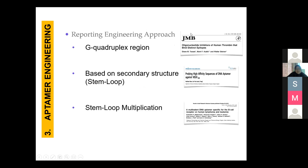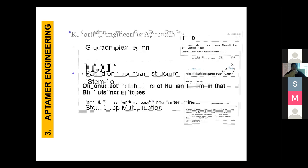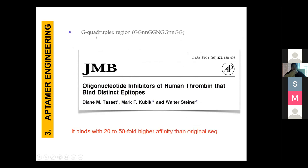Research studies on aptamer engineering suggest: first, folding the aptamer sequence into a 2D structure reveals G-quadruplex regions, which often have better or higher affinity to the target; second, focusing on stem-loop regions from the secondary structure. For example, one study found that when other sequences were removed and only the G-quadruplex region was maintained, it bound with 20 to 50-fold higher affinity than the original sequence. Another study recovered only the stem-loop regions and linked them with a linker to produce a new aptamer sequence using only stem-loop multiplication.